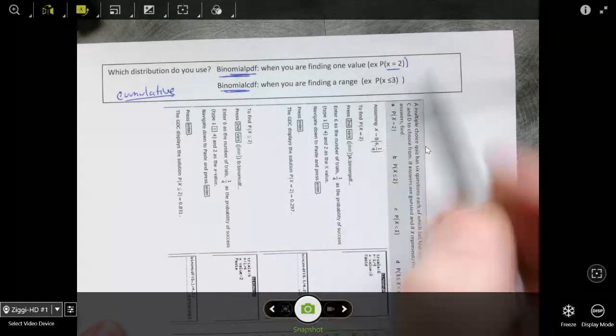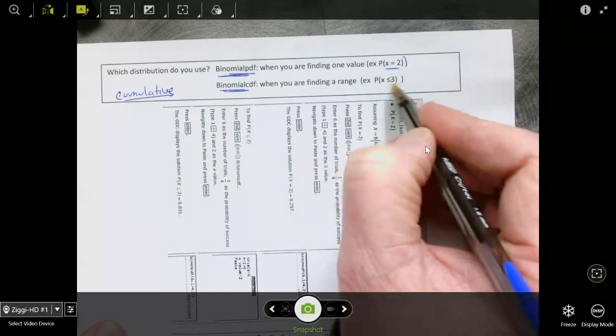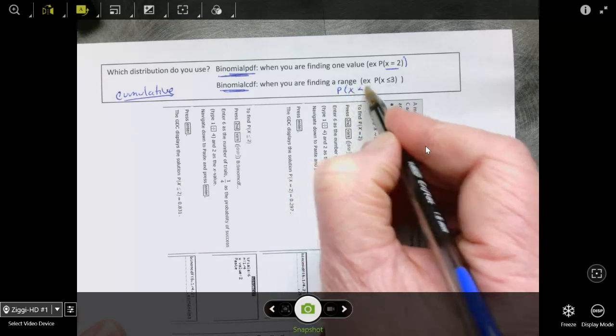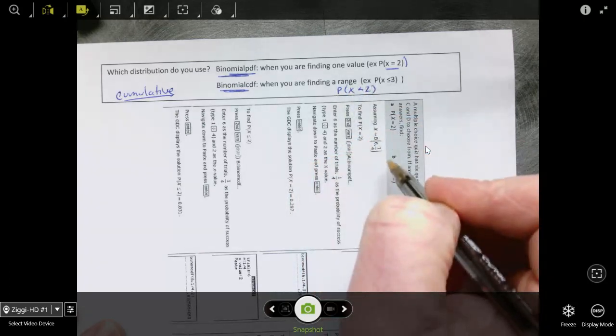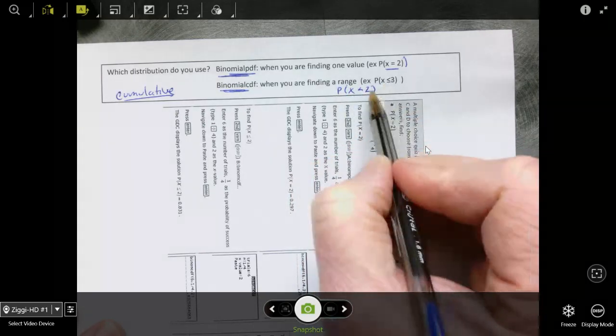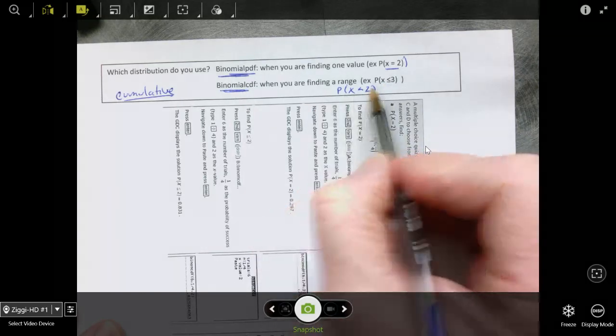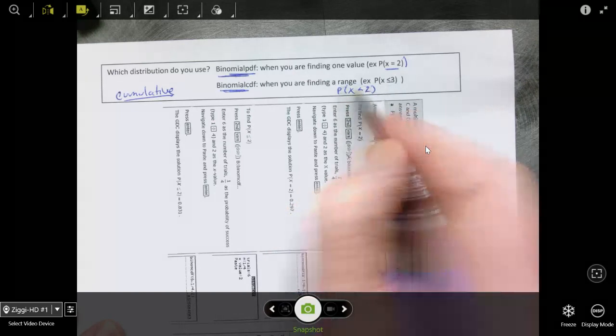And there's some overlap between the two. So you could get an inequality that's like this. And if that's the case, we're not including 2. So it would really be the same as everything that's less than 1 or less than or equal to 1. But any time you have an inequality, you're going to use the cumulative function.